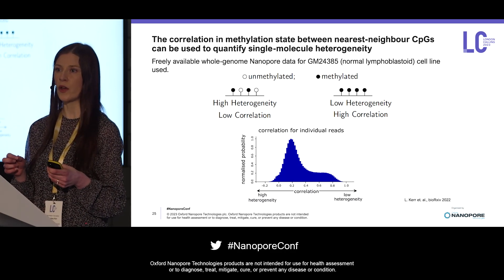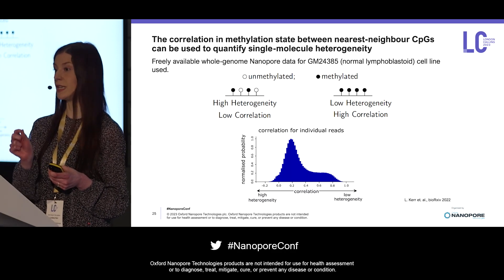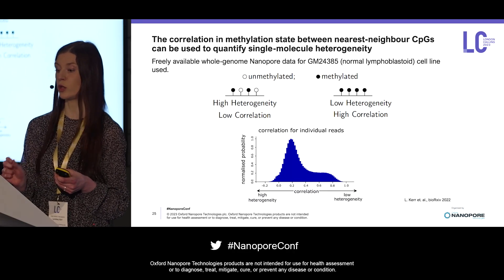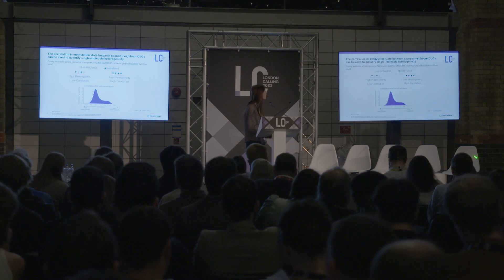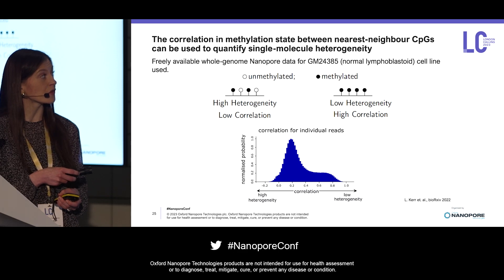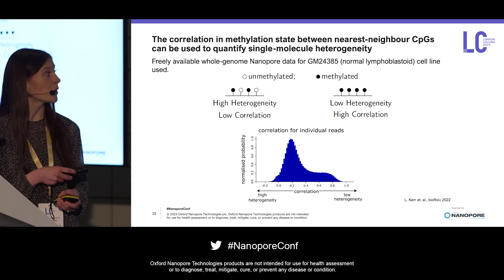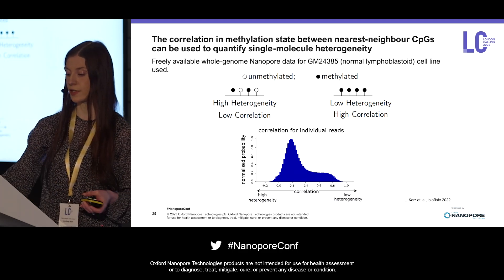I'll talk about a quite intuitive way to quantify this heterogeneity: by looking at how a CpG site's methylation state correlates with the methylation state of its neighbouring CpGs within a single molecule. If CpG sites are very highly correlated with their neighbours in terms of methylation state, that corresponds to a low heterogeneity pattern. Whereas if CpGs show very low correlations with their neighbours, that corresponds to a high heterogeneity single molecule pattern.